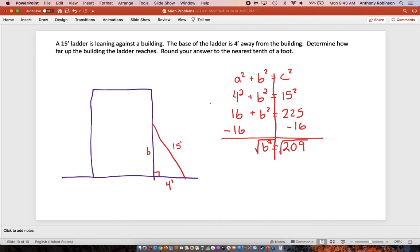So I know that B is approximately 14.5 feet. So the ladder will go up approximately 14.5 feet at the side of the building.